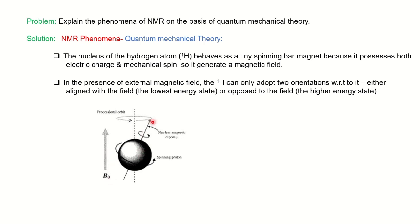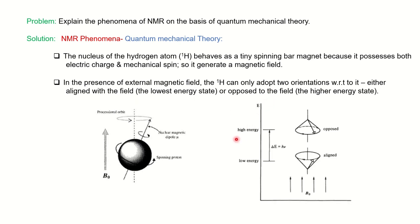In the presence of an external magnetic field, the proton can adopt only two orientations with respect to this external magnetic field — either it can be aligned with the field or it can be opposed to the field. You can see here B₀ represents the external magnetic field. The proton nucleus can adopt either the aligned orientation, where the direction is the same, or the opposed orientation, where the hydrogen is just opposed to the external applied field.